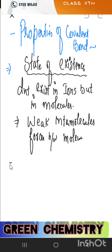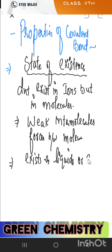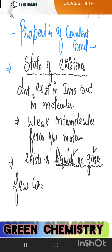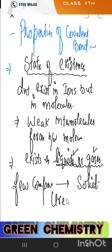Ionic compounds are solid, but covalent compounds with weak forces exist as liquids or gases. However, some covalent compounds do exist as solids — for example, urea (also studied in GOC) and sugar are both covalent compounds but exist in the solid state.